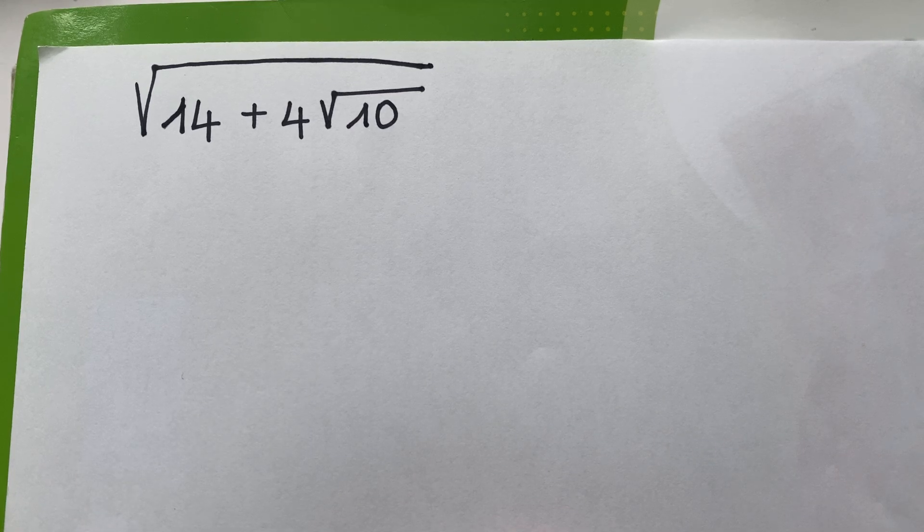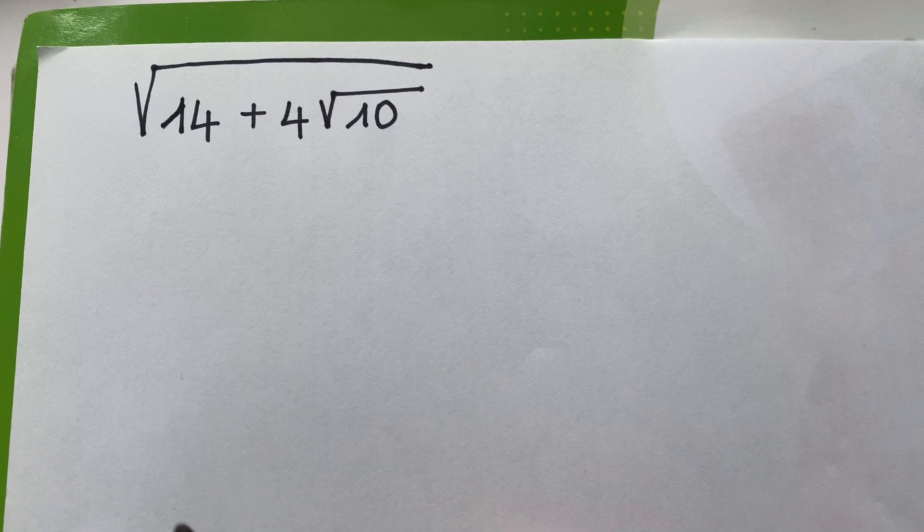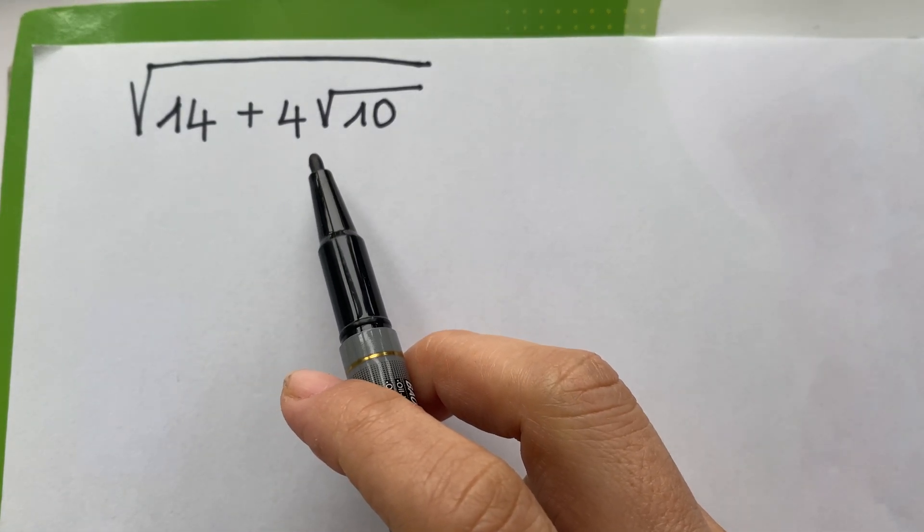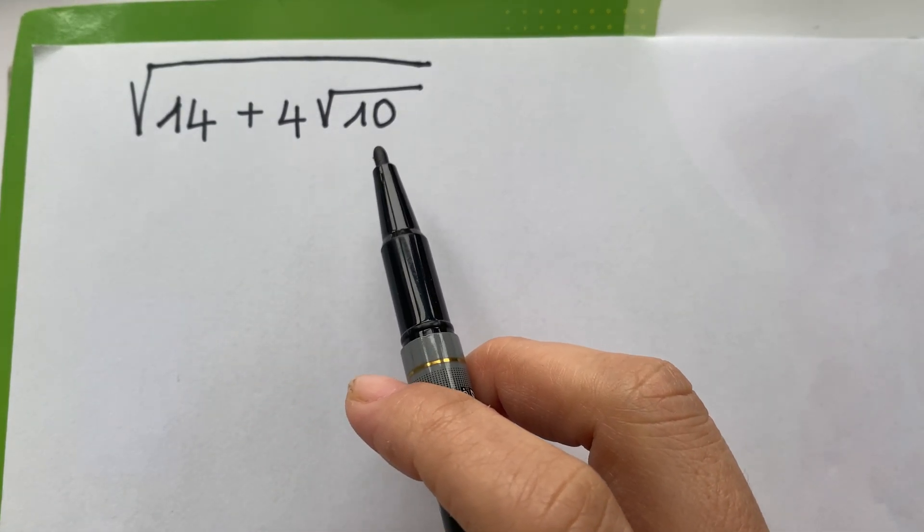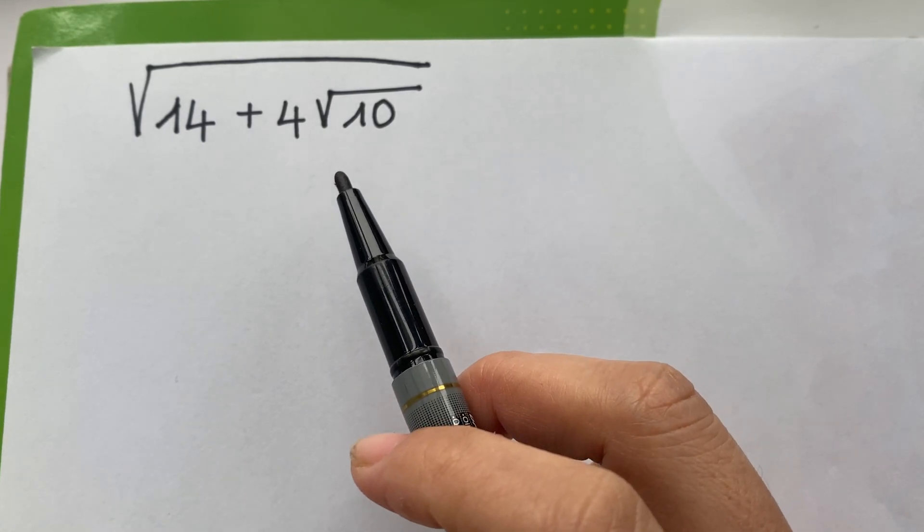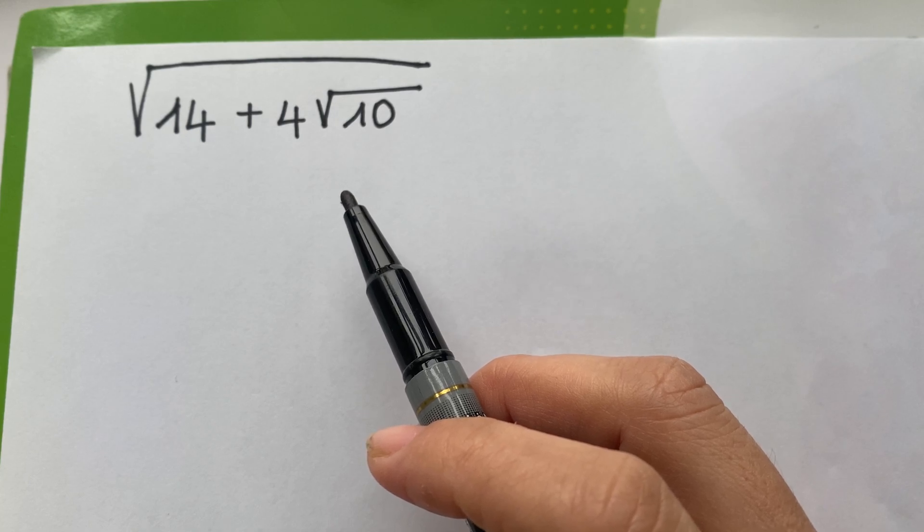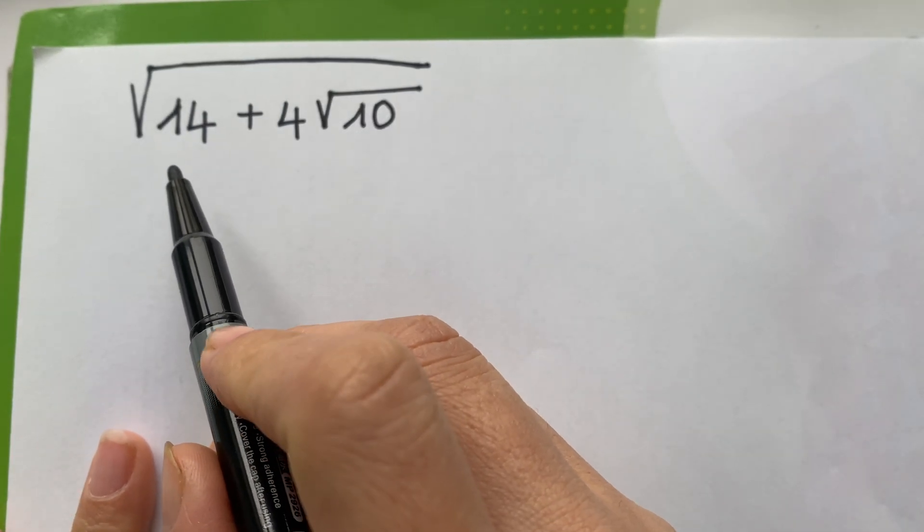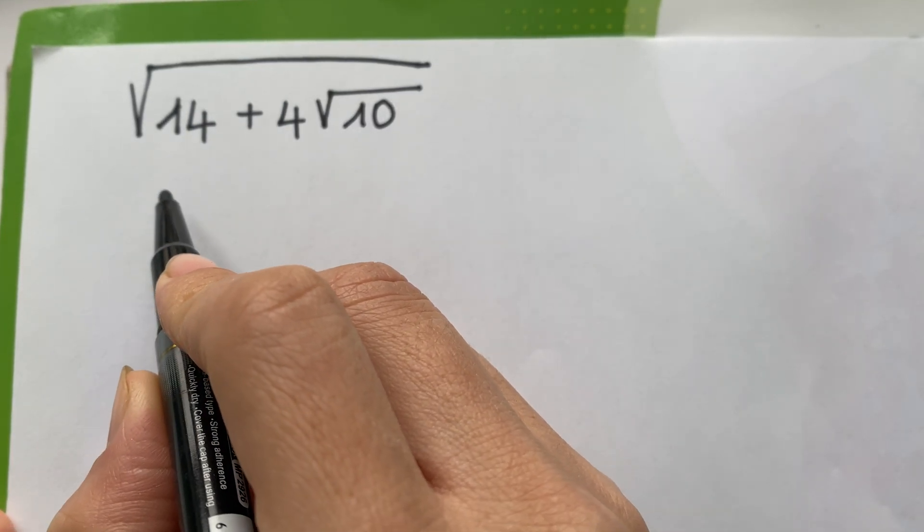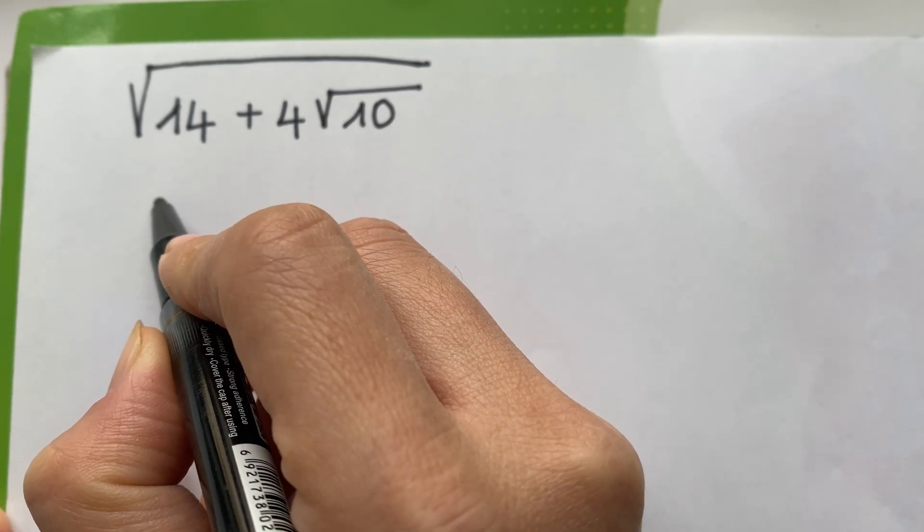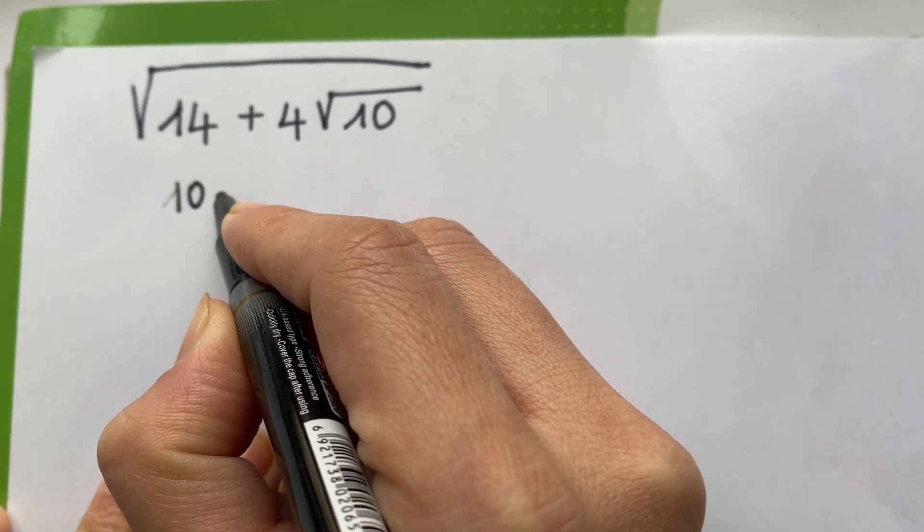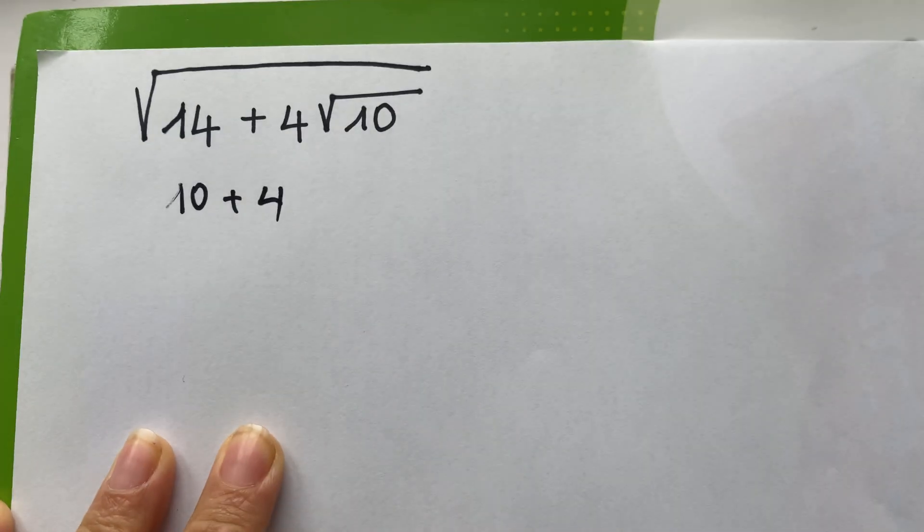Hello everyone, how to calculate fast square root of 14 plus 4 times square root of 10. In this case you can think about the identity. You see that 14 equals is the same as 10 plus 4.